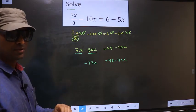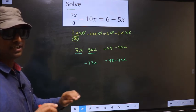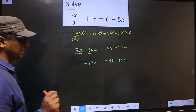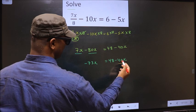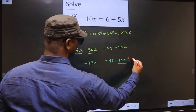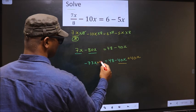Now we should put all the x terms on one side and the numbers on the other side. What I mean is minus 40x should not stay on this side. So to remove minus 40x, you add 40x on both sides.